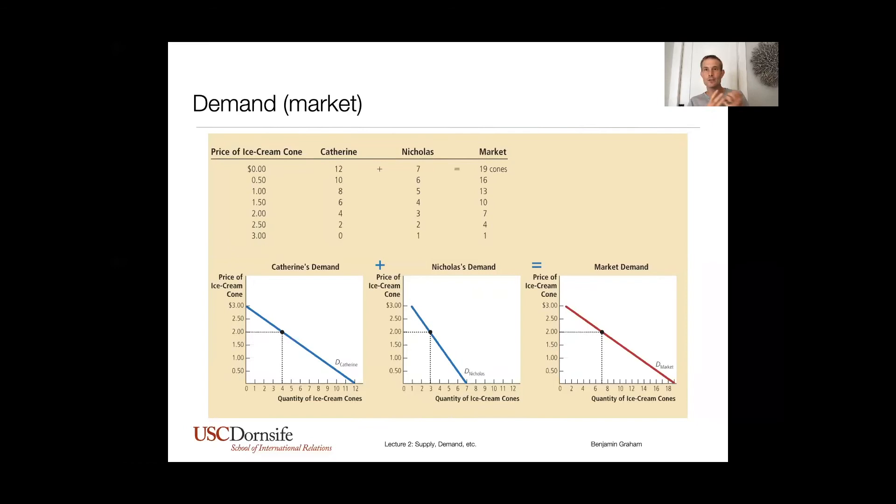So if we have Catherine's demand curve here on the left, and then we have Nicholas's demand curve here. Catherine, her willingness to consume as price falls, when they get really cheap, she's really willing to buy a lot. Catherine likes a deal. Nicholas kind of tapers off a little bit sharper, a little bit of a steeper demand curve. After seven, he's out, no more. But if we want to understand the market demand curve, we're adding both of their demands together. It's still a curve, still looks a lot like an individual demand curve, but it's the aggregate of multiple individual demands. It's just an addition problem here.